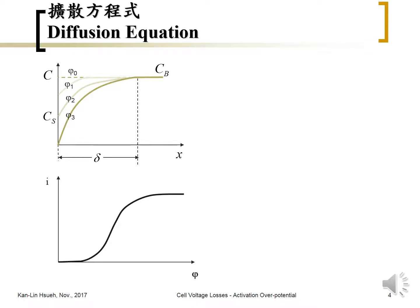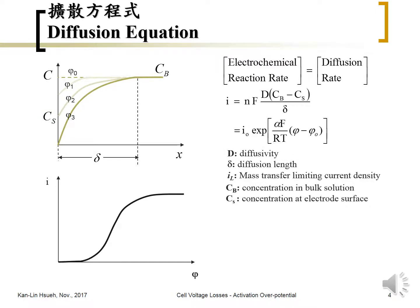If we plot the current against different potentials — representing the reaction rate on the electrode surface — the electrochemical reaction rate equals the diffusion rate. The diffusion rate can be expressed by the diffusion equation, and the electrochemical reaction rate can be expressed by the Tafel equation. On this chart, at equilibrium there is no electrochemical reaction, so cs equals cb and current equals zero at phi equal to phi zero.